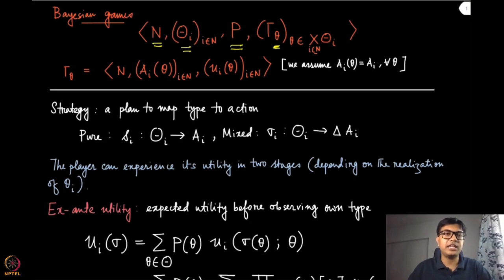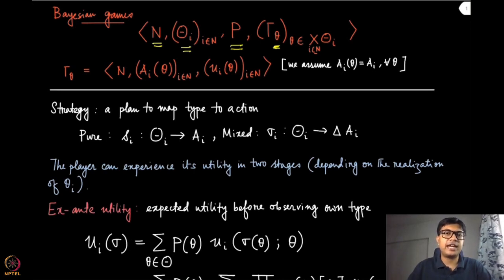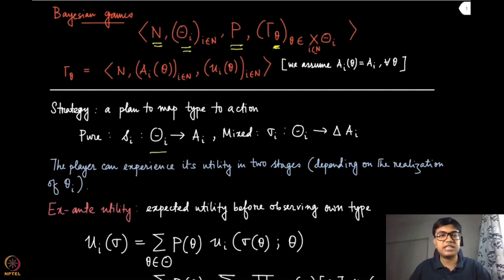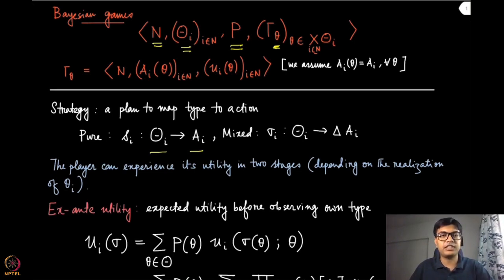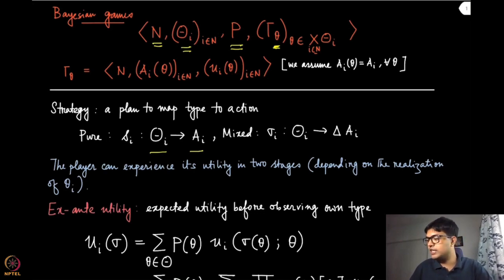Remember that a Bayesian game is somewhat an extension of the normal form game, with the difference that it chooses different kinds of normal form games given the type profile. So the strategy, both pure and mixed, has a very similar structure and definition. The difference is that now it is a mapping from the type set to the set of actions for pure strategies. If player i has a specific type, then the strategy corresponding to that type is a specific action in that set. This is what we call the strategy in the Bayesian game setting, written as s_i of theta_i.